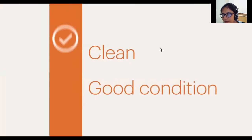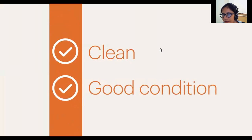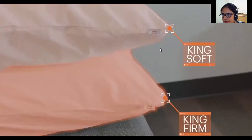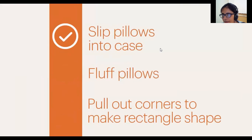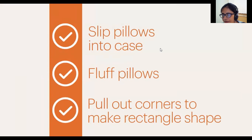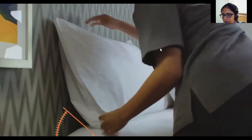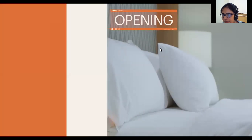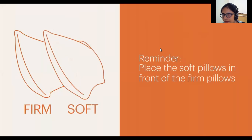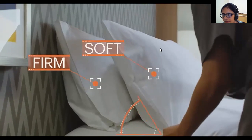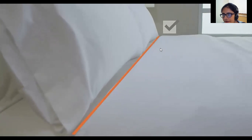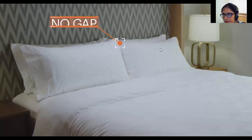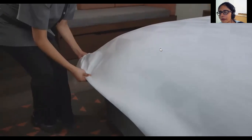The final step in the bed-making process is placing the pillows. Ensure pillow protectors have no cleanliness or condition issues and replace if needed. Use the appropriate size pillows for the bed. After slipping each pillow into the case, fluff the pillows and pull out the corners to make a crisp rectangle shape. Position the firm pillows against the headboard at a slight backward angle with the pillowcase opening facing outward. Place the soft pillows in front of the firm pillows in the same manner. The pillows should be placed behind the duvet cover fold, with pillow corners touching the middle of the bed and as little space as possible between them. Make a final visual check with any necessary smoothing and adjustments.